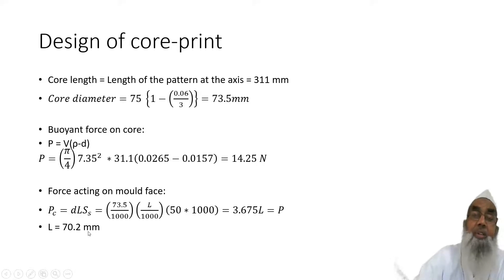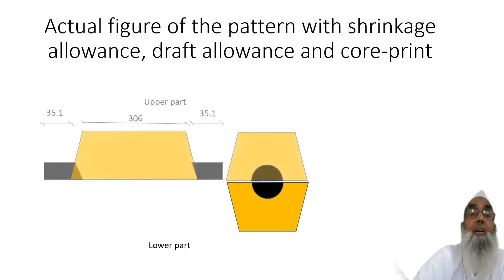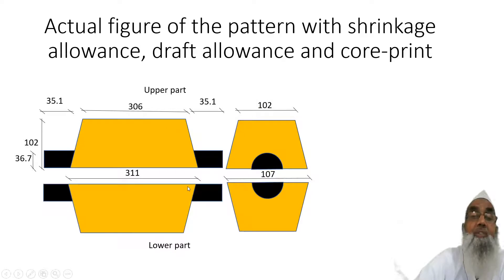This total core print length will be divided to two sides, and therefore L/2 equals 35.19 mm. The actual figure of the pattern, with shrinkage allowance, draft allowance, and the core print, can now be drawn — the upper half is on top and the lower half is below. This completes the split pattern design.